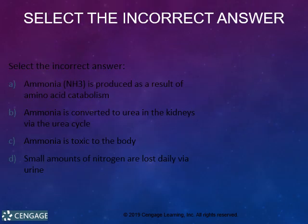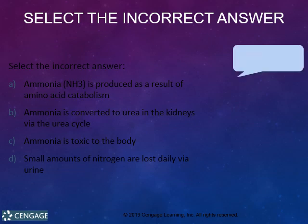See if you can select the incorrect answer among the four following statements: A) ammonia is produced as a result of amino acid catabolism; B) ammonia is converted to urea in the kidneys via the urea cycle; C) ammonia is toxic to the body; D) small amounts of nitrogen are lost daily via urine. The answer is B — ammonia is actually converted to urea in the liver.